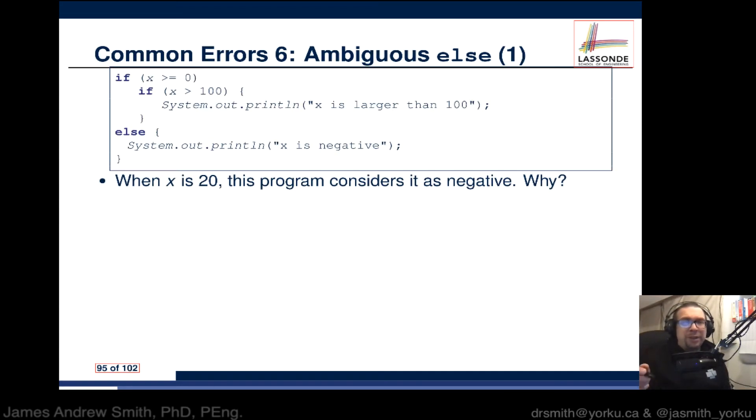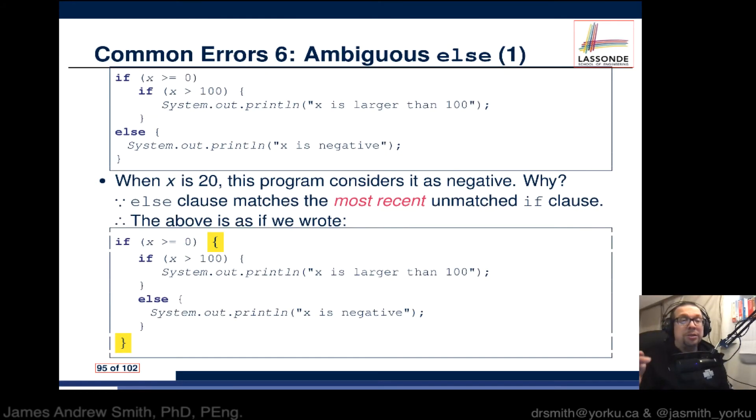When x is 20, this program considers it to be negative. That's because the else clause matches the most recent unmatched if clause, but there's no way for you to actually know that. You'd have to try it out.